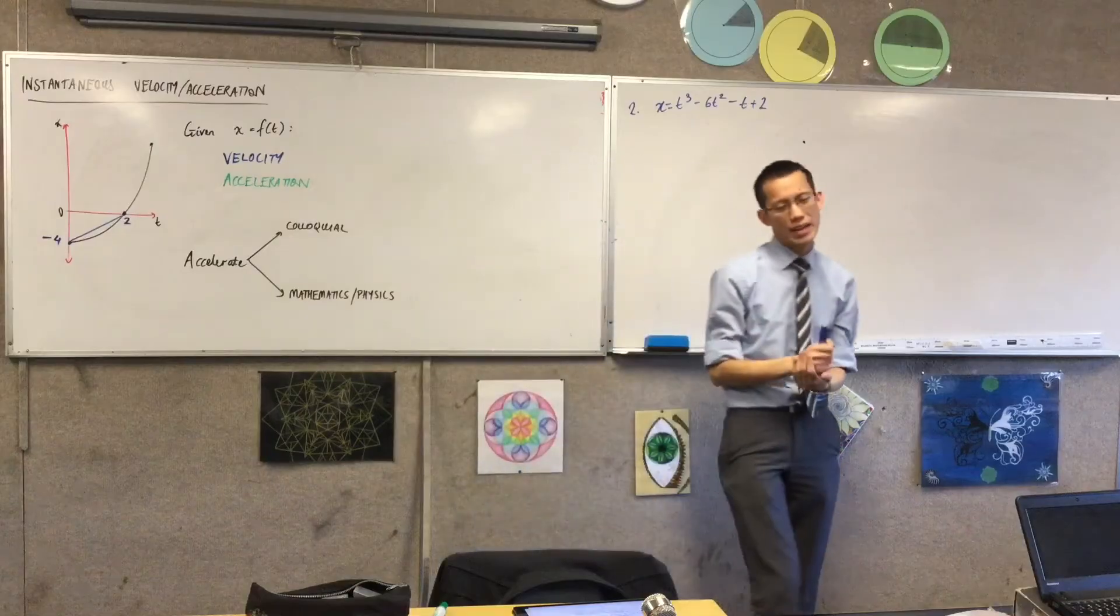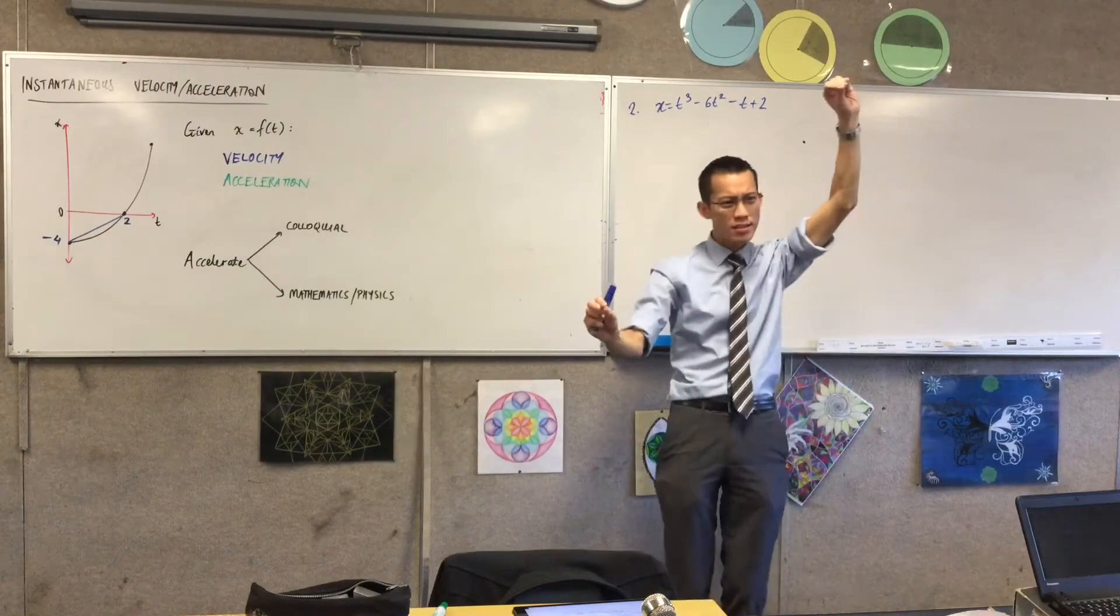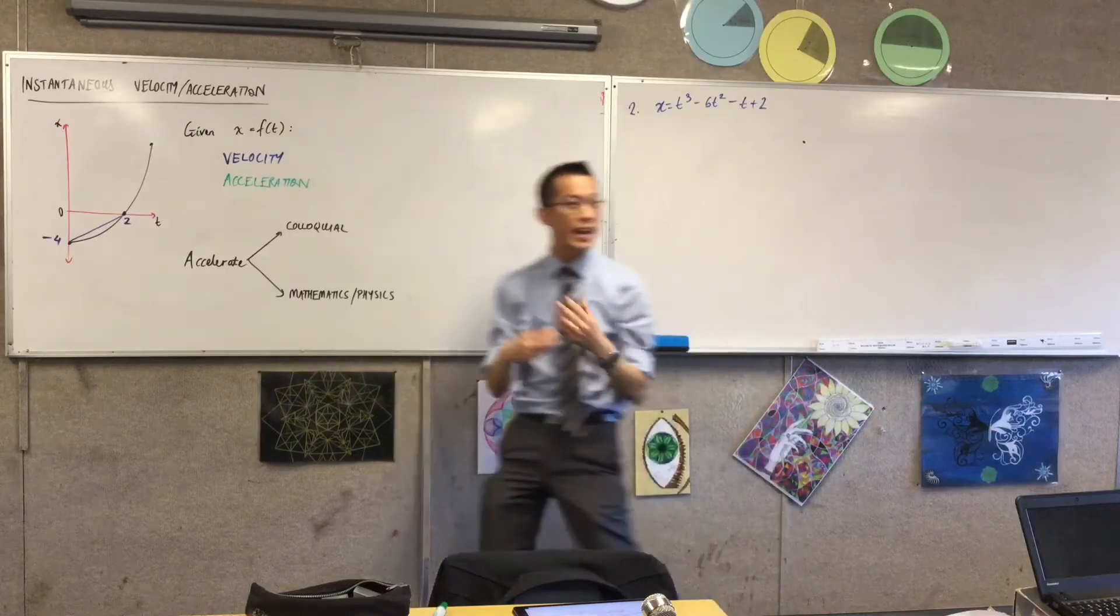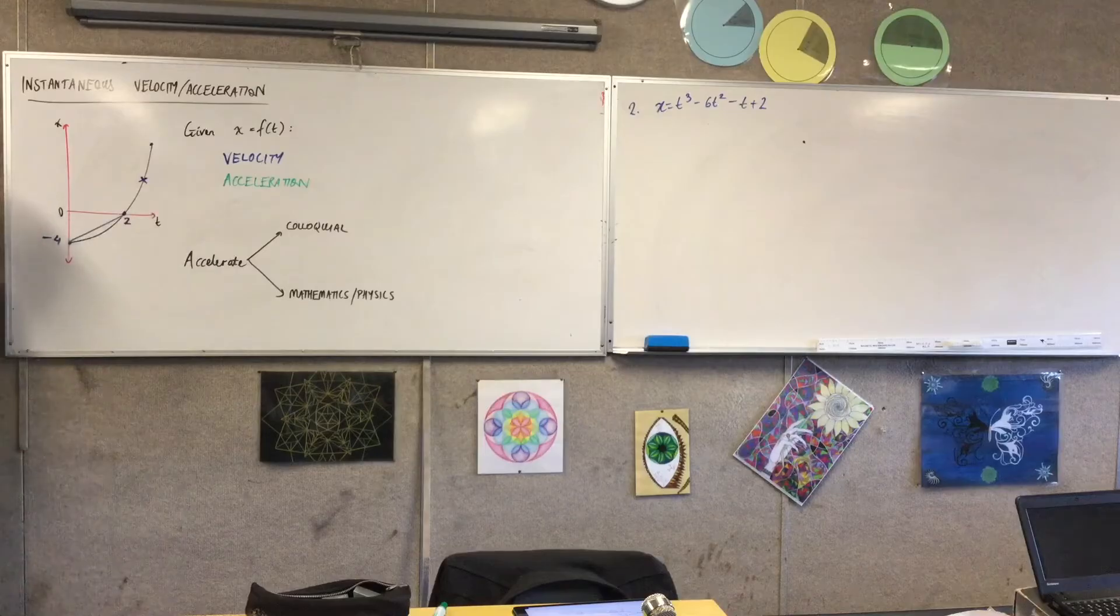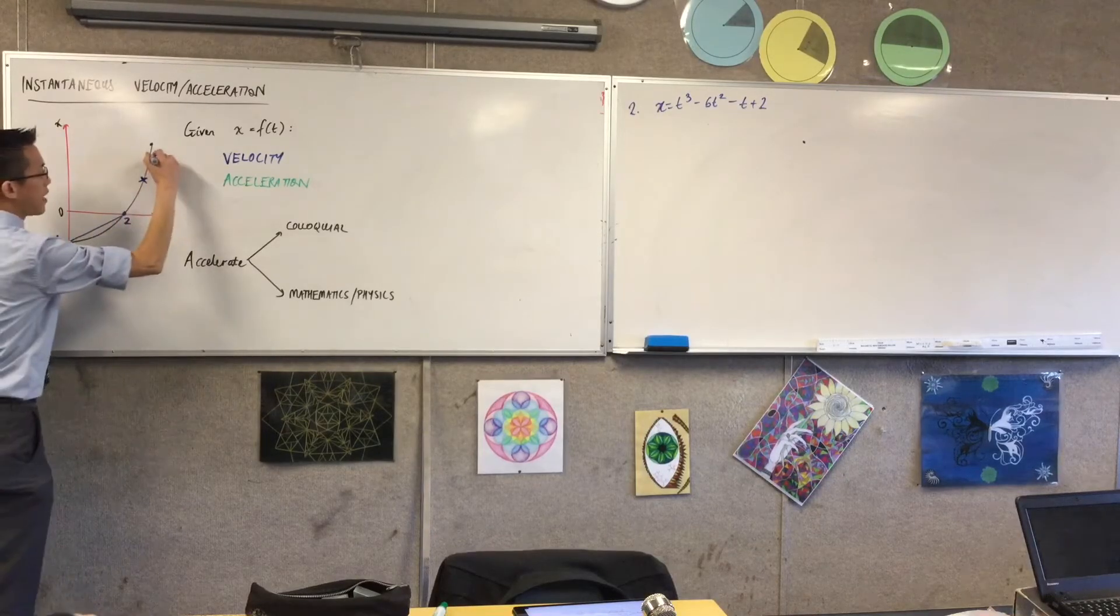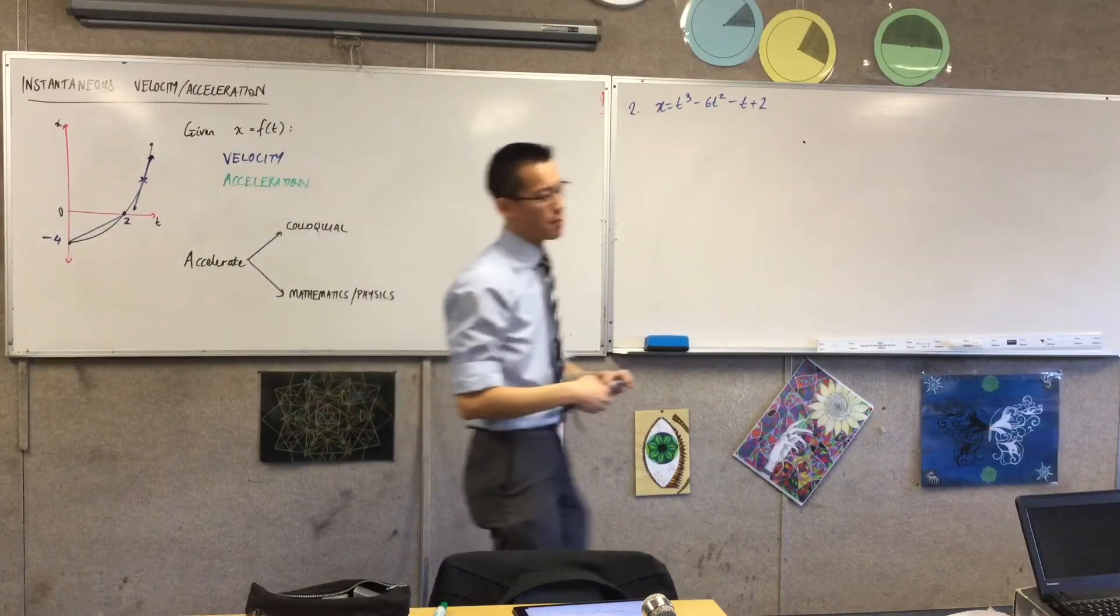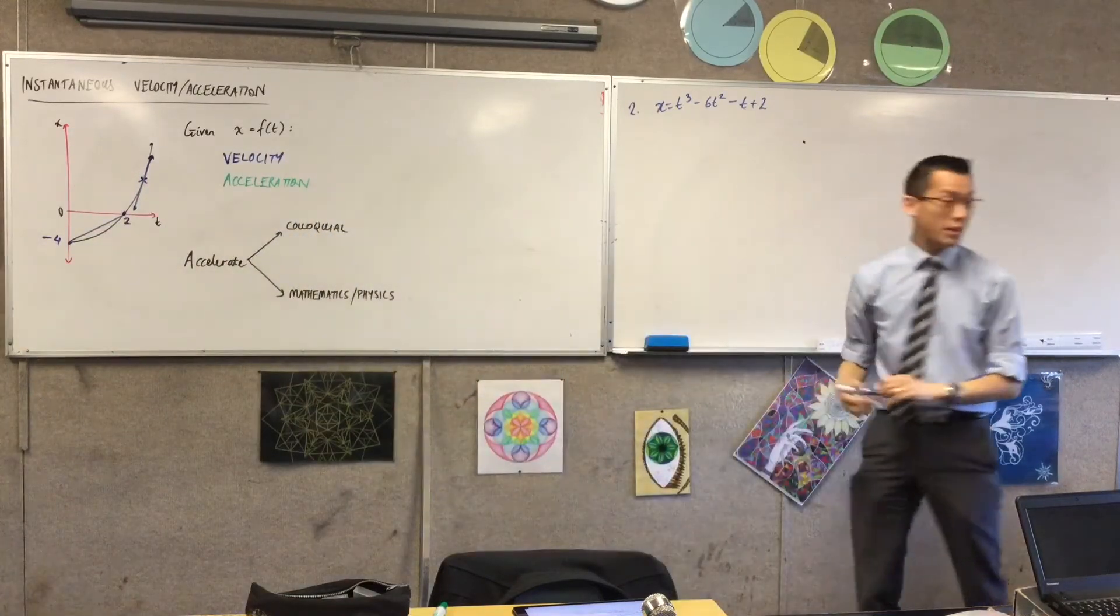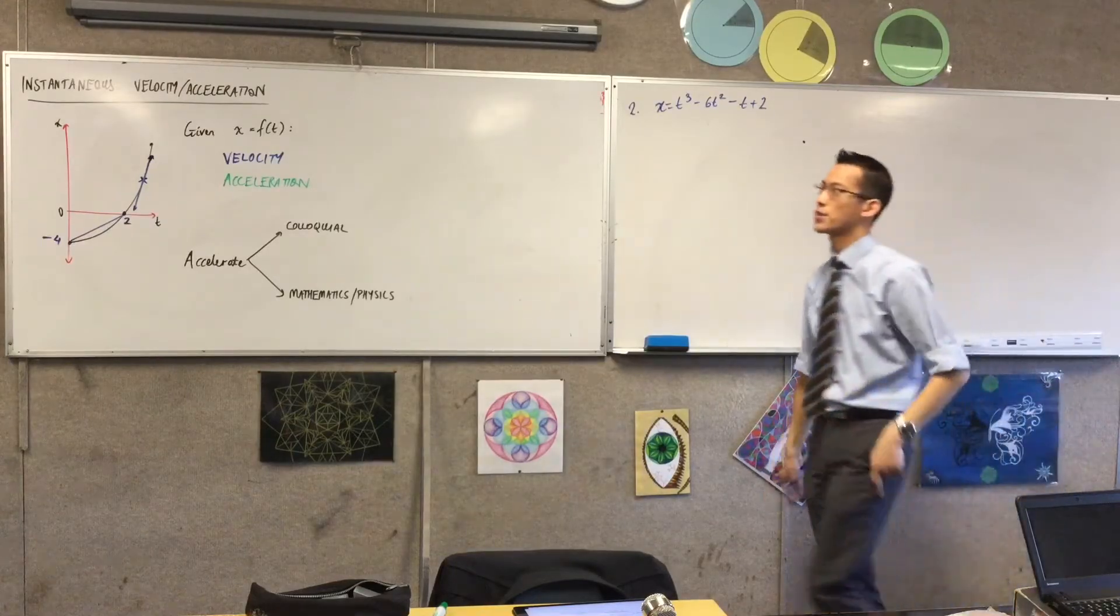But now that we know calculus, calculus takes gradient and says, you know what, you don't need two points. You can just say at any particular point, like say right there, with calculus I don't need to worry about an interval. I can find out the gradient at a single instant on my graph. So therefore, that's what takes us from average velocity acceleration to instantaneous velocity acceleration.